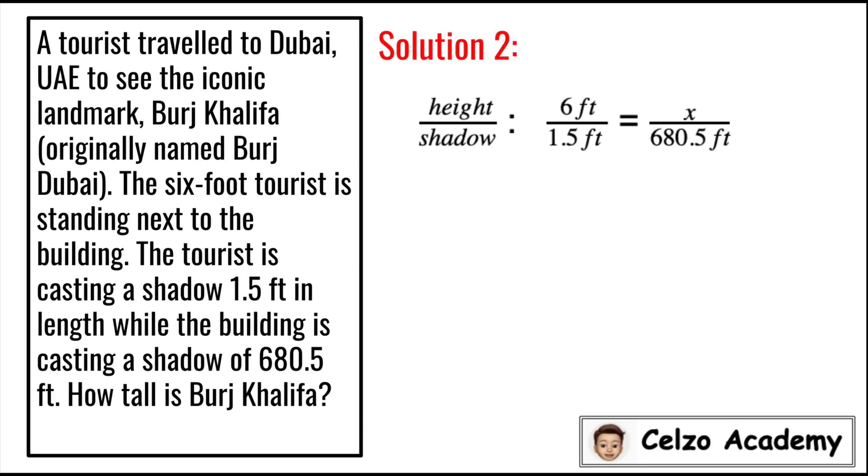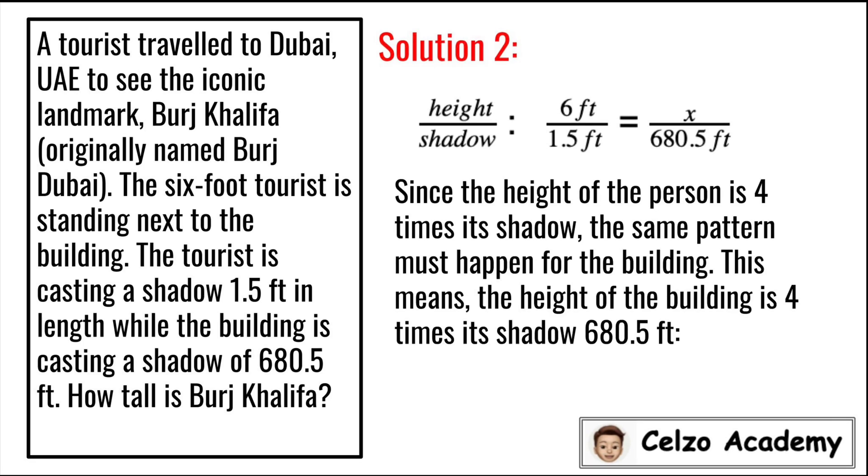Here's our second solution. For solution number 2, let's compare the height 6 and the shadow 1.5 feet in length. Since the height of the person is 4 times its shadow, the same pattern must happen for the building as well.